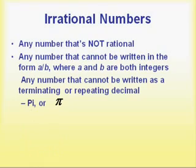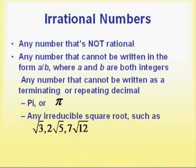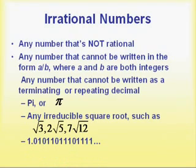Irrational numbers are numbers whose decimal goes on forever but never establishes a pattern and never repeats — any number that cannot be written in the form A over B where A and B are both integers. Some you're familiar with, like the number pi, used to calculate the circumference or area of a circle. Others include the square root of 2, the square root of 3, the square root of 15 — any irreducible square root is an irrational number. Another kind is a decimal that establishes a pattern but never one that repeats an infinite number of times.